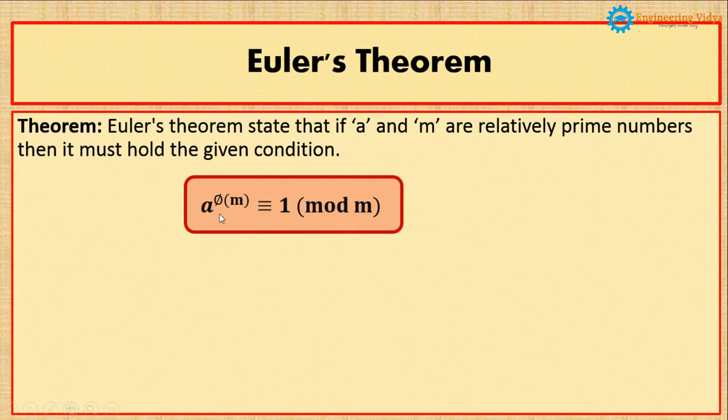This statement says that if you have two positive integers a and m, and GCD of a and m is one, or in other words where a and m are relatively prime numbers, then you can write a raised to phi of m is congruent to 1 mod m. This is the statement called Euler's theorem.